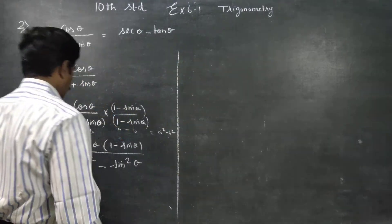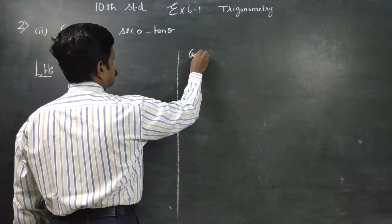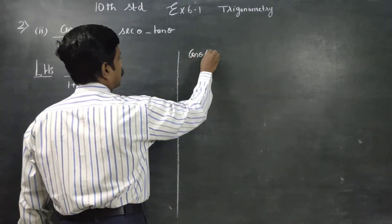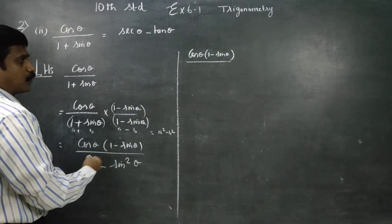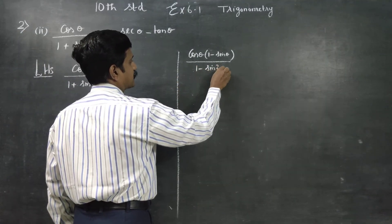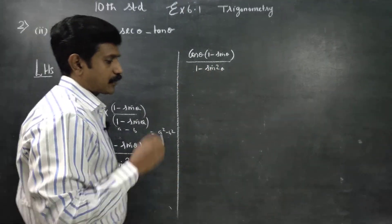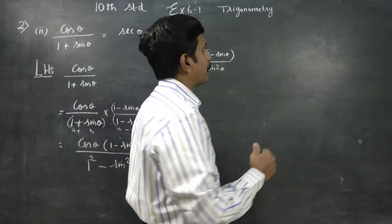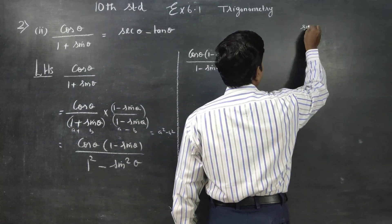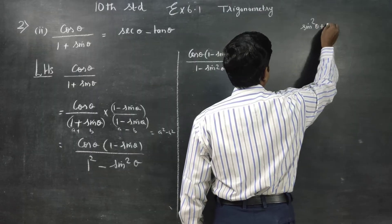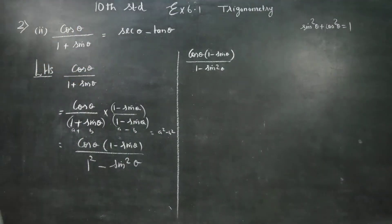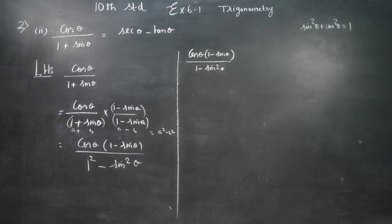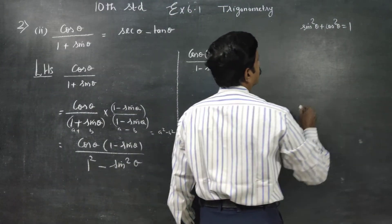The next stage: we have cos θ times (1 - sin θ) divided by (1 - sin² θ). Now using the famous trigonometric identity, cos² θ = 1 - sin² θ, so the denominator becomes cos² θ.